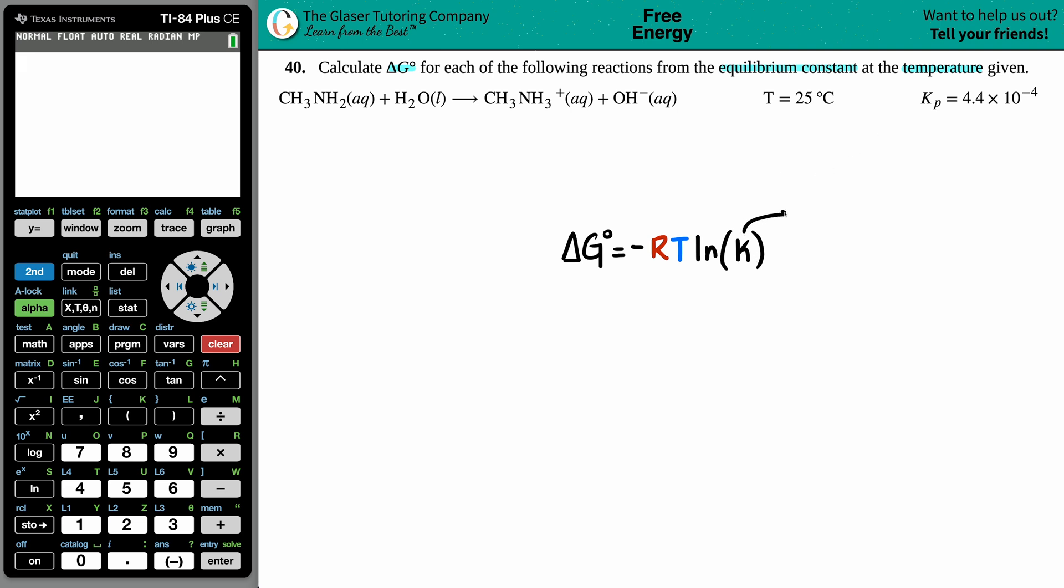So, in this case, we're going to use the 4.4 times 10 to the negative fourth. Now, we just need to know what the R value is and what the temperature is, capital T. Well, the R value is a constant value. That's why they're not going to give it to you. We have to memorize that it's 8.314 if we're using this formula.